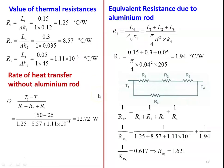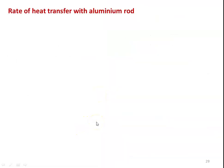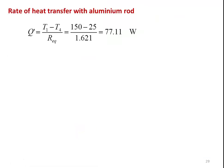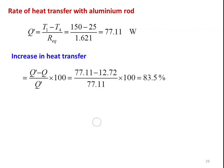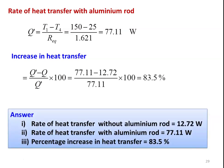Heat transfer without aluminum rod is 12.72 W and heat transfer with the aluminum rod is 77.11 W. There is a large increase in heat transfer because aluminum has a high thermal conductivity of 205 W/m·K. Percentage increase in heat transfer = (Q' − Q)/Q' × 100 = (77.11 − 12.72)/77.11 × 100 = 83.5%. The answers: Q = 12.72 W, Q' = 77.11 W, percentage increase = 83.5%.